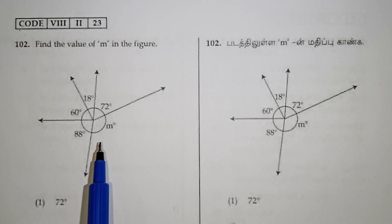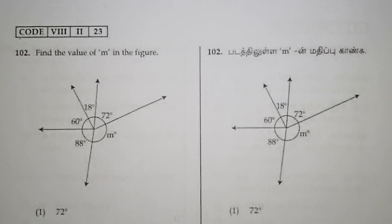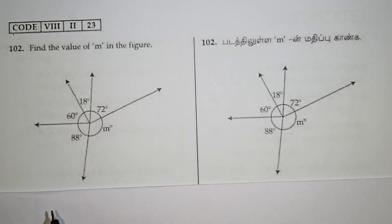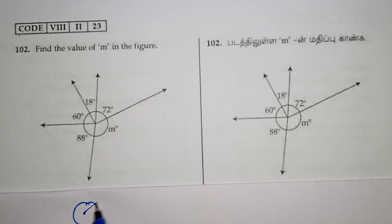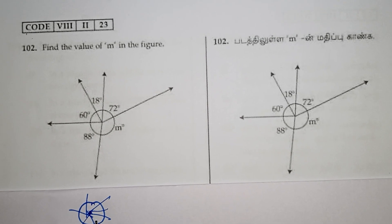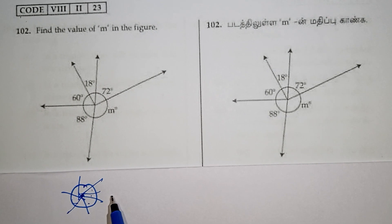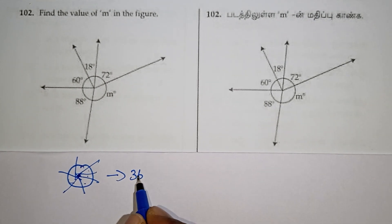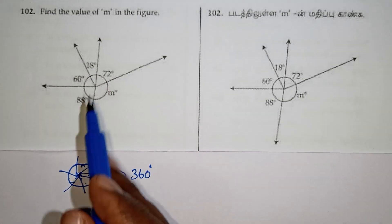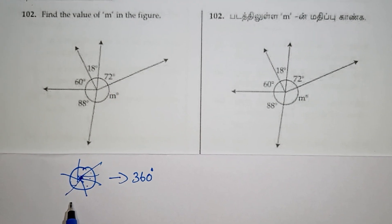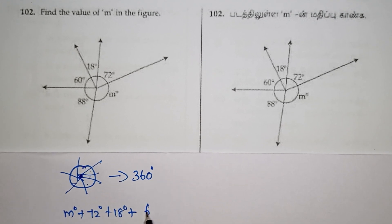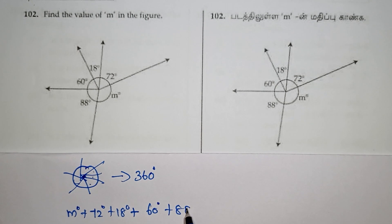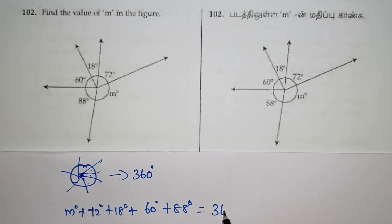We have a diagram with all angles to fill. One key point: if you want to add all angles around a point, all angles must fill 360 degrees. The circle is 360 degrees. So, M plus 72 plus 18 plus 60 plus 88 must equal 360 degrees.